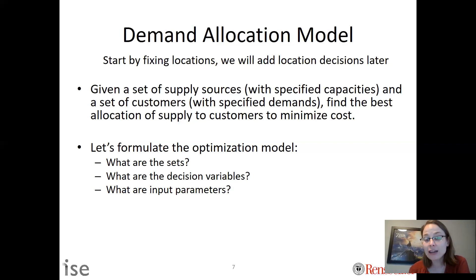Those are things we do not get to change in our optimization model. Those are given. What is the objective function? That is our goal, and here it's to minimize cost of transportation and production. And then what are the constraints? Our constraints are we need to meet demand and we only have so much capacity to do so.